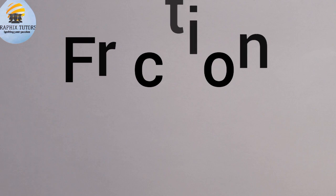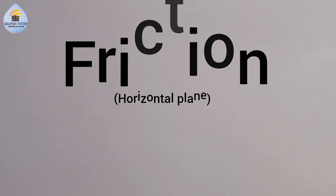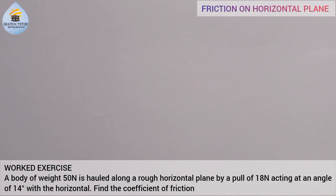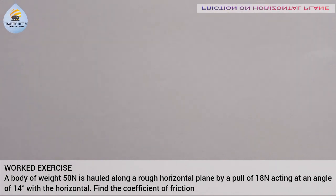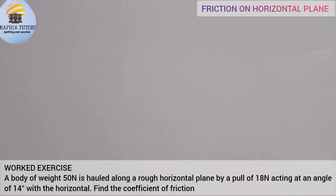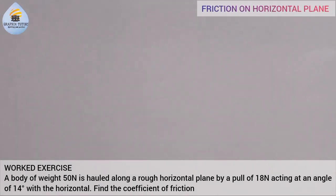Good everyone, my name is Graphics. Today we want to solve a problem involving friction on a horizontal plane. The question goes like this: a body of weight 50 Newton is hauled along a rough horizontal plane by a pull of 18 Newton acting at an angle of 14 degrees with the horizontal. Find the coefficient of friction. The first thing you have to do is draw your free body diagram.